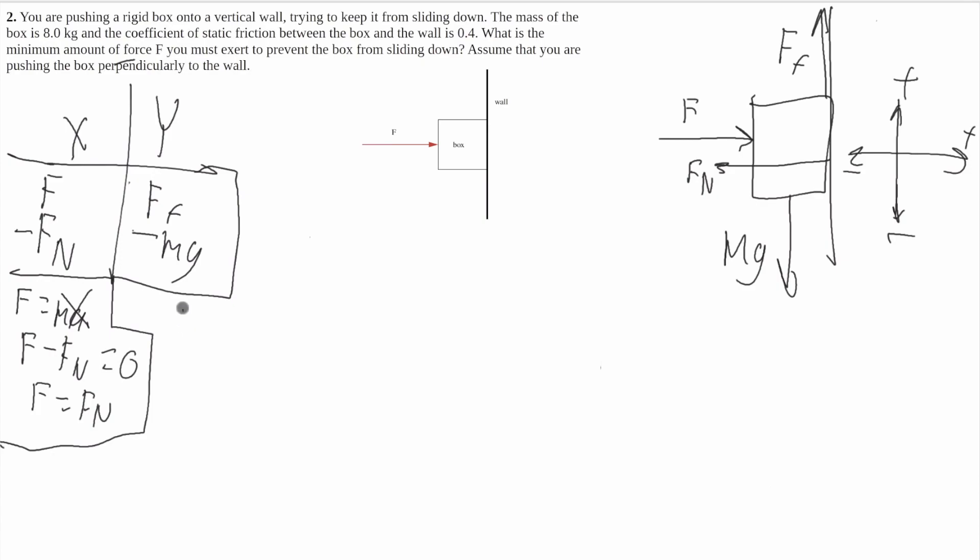And in the y, it'll be F equals ma. But for the same reason as this one, the acceleration is zero. It wants you to find the force where the box doesn't slide down. The acceleration is zero because the box isn't going anywhere. So it'll be force of friction minus mg equals zero. So Ff equals mg.